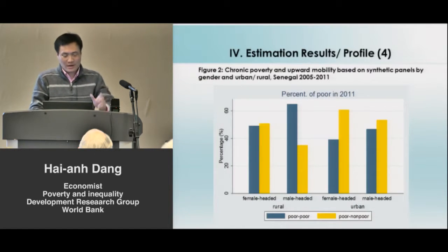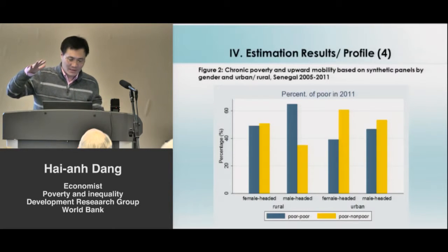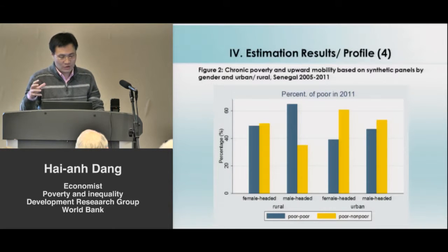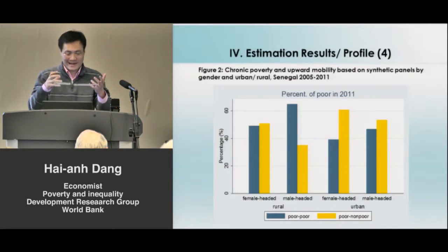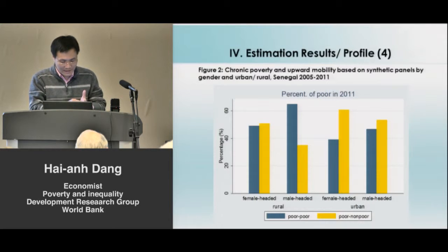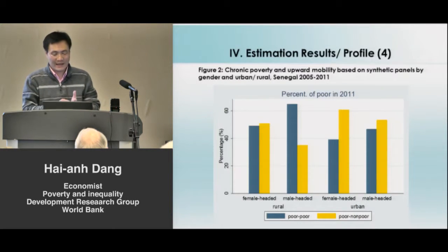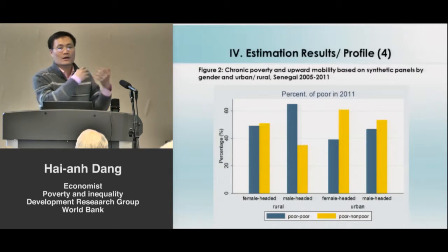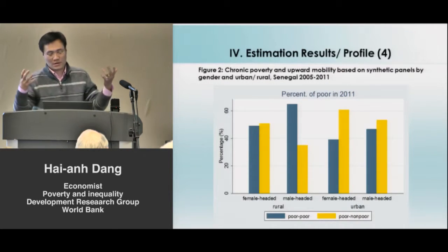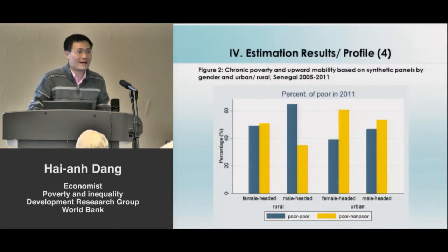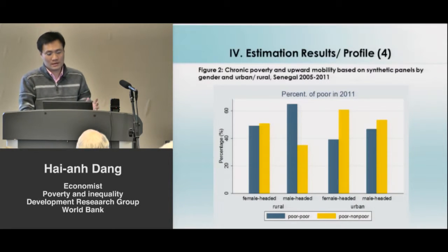Another way to get less aggregated estimates is to interact gender and urban characteristics — looking separately at female-headed households in rural areas, female-headed households in urban areas, and so on — to see the interaction of characteristics in terms of poverty reduction.